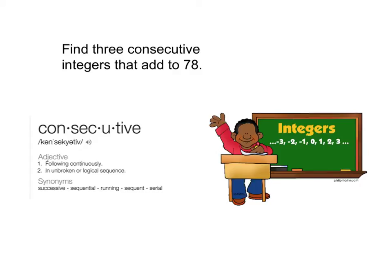But integers can be 1, 2, 3, 4, 0, and then negative counting numbers. So think whole numbers, think 0, and think the negatives.